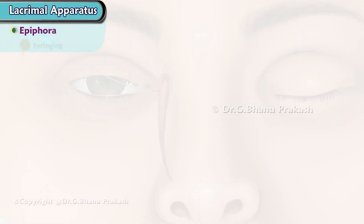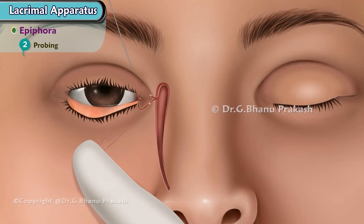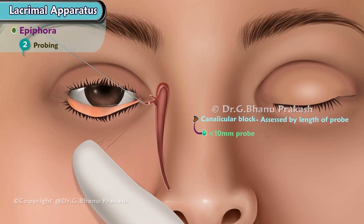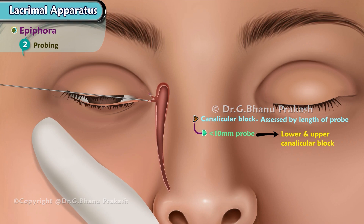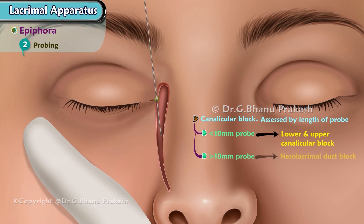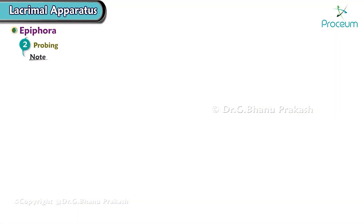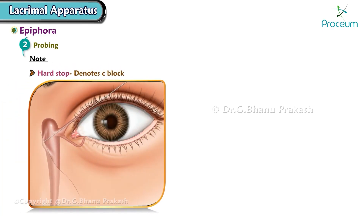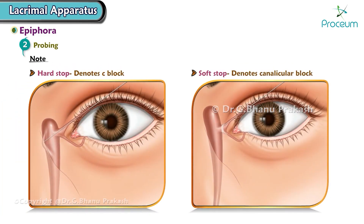2. Probing: Canalicular block is better assessed by the length of the probe. If less than 10 mm, it marks the lower or upper canalicular block. If greater than 10 mm, it marks nasolacrimal duct block. Note: Hard stop on probing denotes a bony block; soft stop denotes a canalicular block.